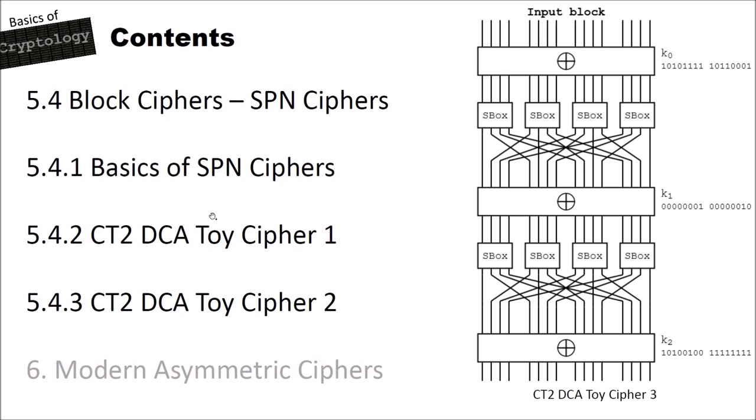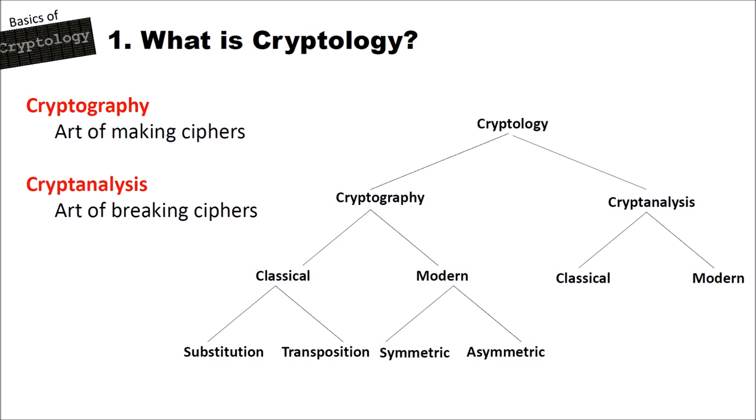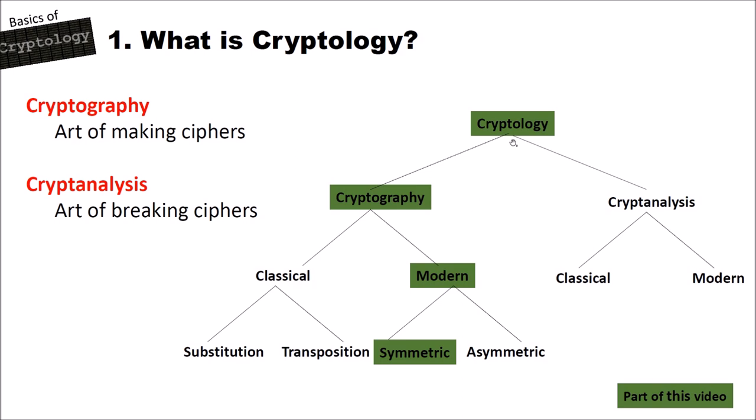As in every video in this series, cryptography is the art of making ciphers and cryptanalysis is the art of breaking ciphers. We are at cryptology, cryptography, modern cryptography and symmetric ciphers, because substitution permutation networks are symmetric block ciphers.